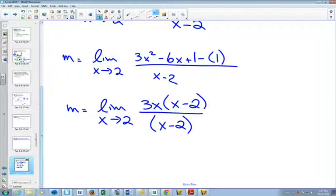And you can factor the top. There's a common factor of 3x, leaving you with x minus 2, which should make you feel happy. Because at this point, now that you've factored it, the x minus 2s will cancel out. And now you can apply the limit and say, our slope is, when I plug in 2, 6.